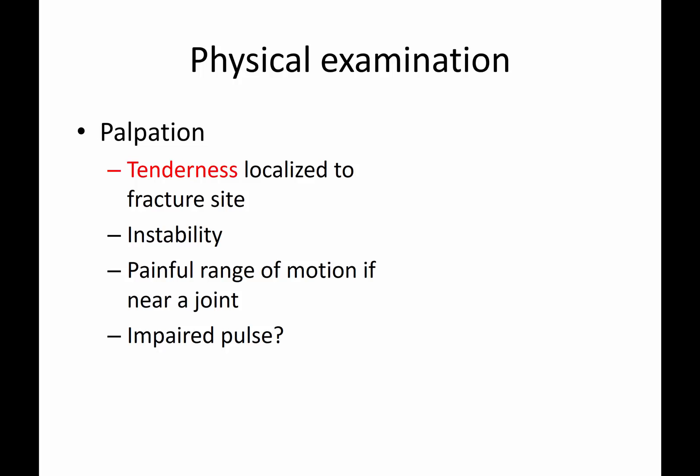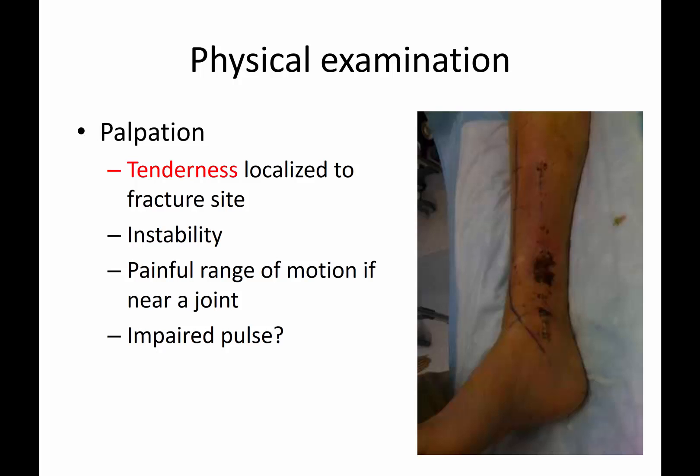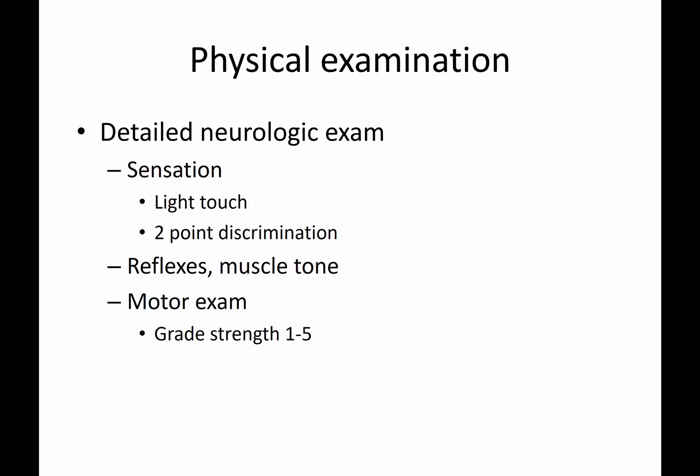There can be instability, particularly in a displaced fracture. If the fracture is near a joint, there can be painful range of motion, and even a diaphyseal fracture can still lead to painful range of motion. You may not palpate a pulse, or it could be impaired — in which case you may have a real problem if the fracture has also led to some kind of vascular compromise. You should compare swelling to the contralateral limb as well.